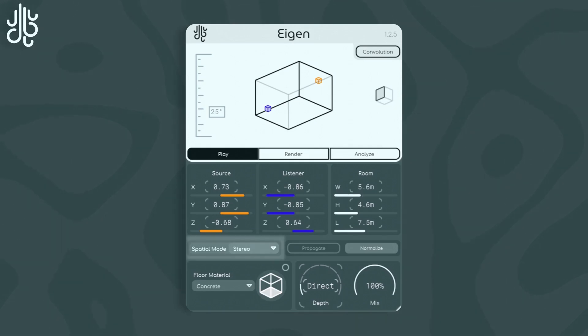You can also change the spatial mode by changing this dropdown here. Reflections can be processed in mono, stereo, and either standard quality or high quality binaural. You'll need to have headphones on to tell the difference here, though.